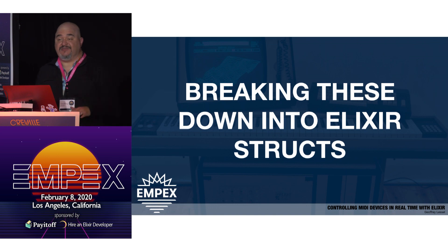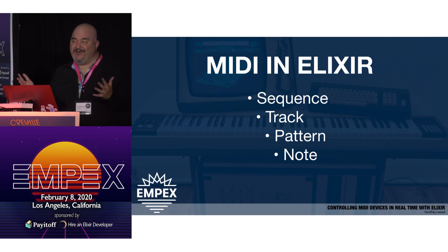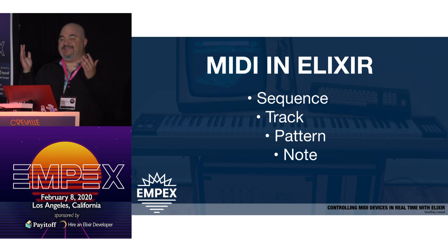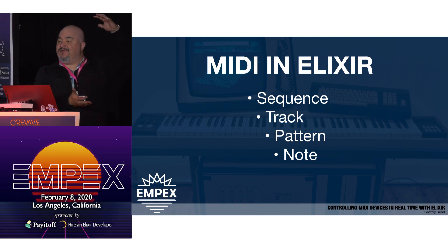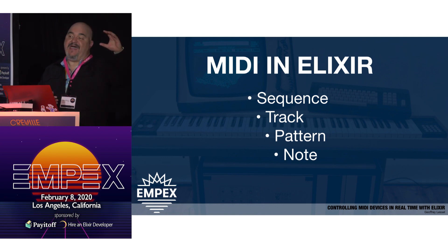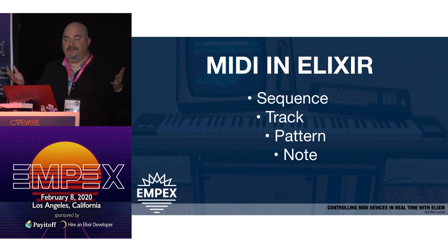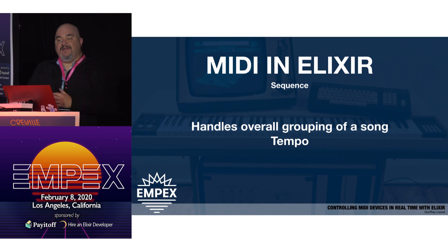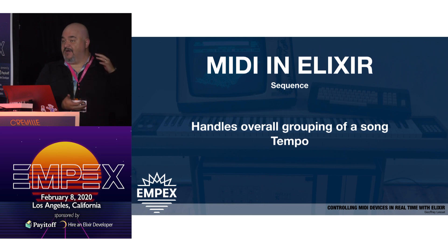Now we need to break these down into Elixir structs. Here's how I organized it — this is just how I did it, I don't know if it's the best way, but it works. I've got a sequence, and a sequence can have one or more tracks. A track can have one or more patterns. A pattern can have one or more notes. That basically creates a song. A sequence handles the overall grouping — which patterns we're playing and the overall tempo so everything plays at the same tempo.